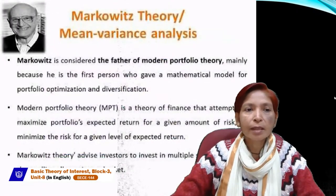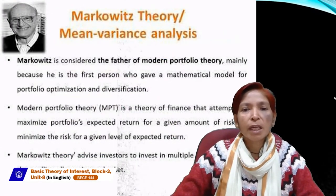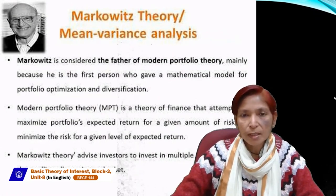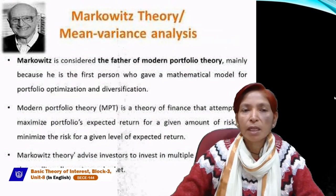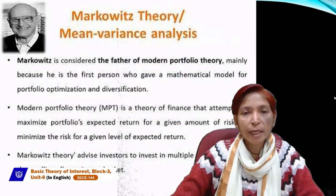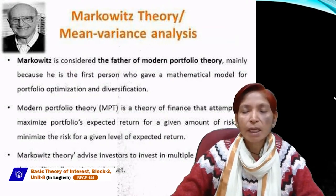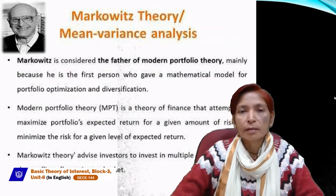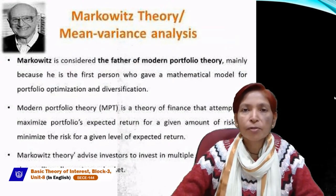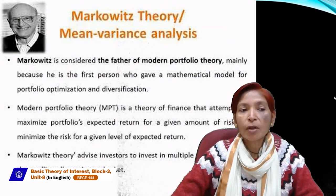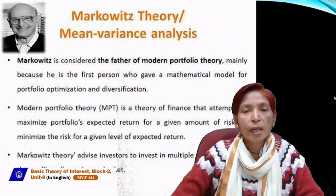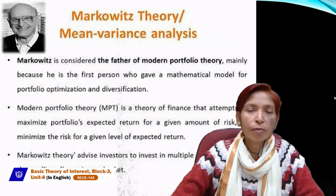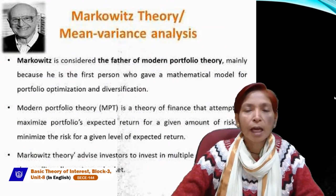Markowitz theory is related to mean-variance analysis, sometimes simply called mean-variance. Mean is the average and variance shows variability — both are part of statistical analysis. Mean-variance analysis and Markowitz theory are interrelated. Markowitz is considered the father of modern portfolio theory mainly because he was the first person who gave a mathematical model for portfolio optimization and diversification.